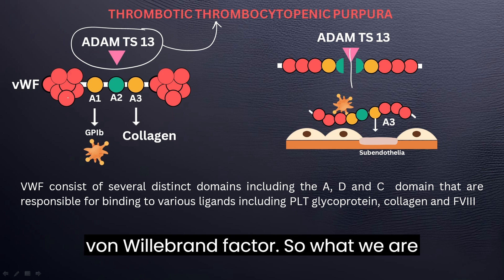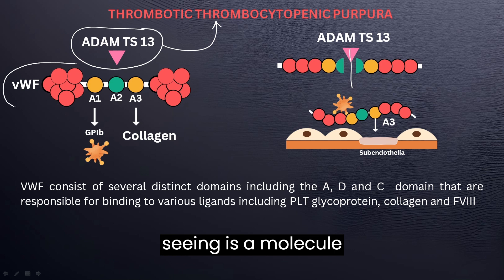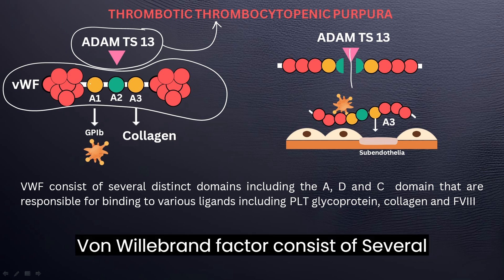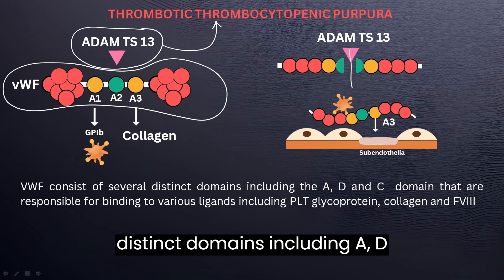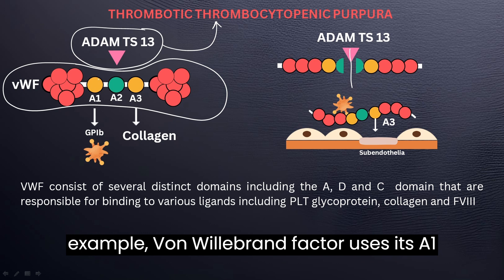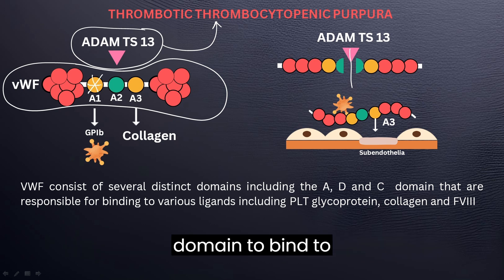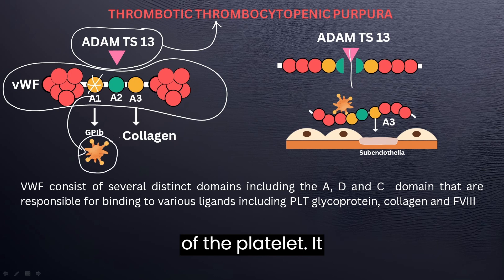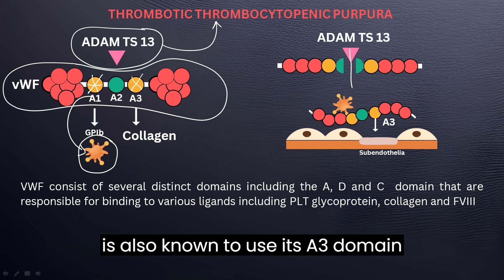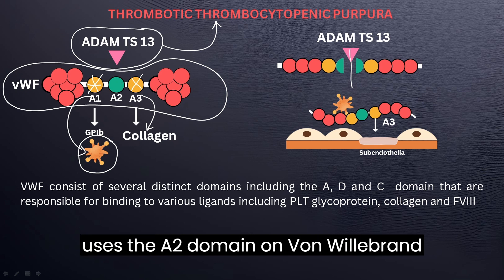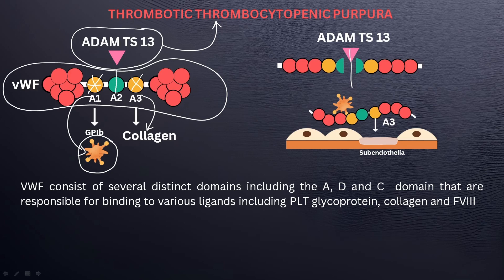Let's take a better look at von Willebrand factor. What we are seeing is a molecule that is partially unfolded. Von Willebrand factor consists of several distinct domains including A, D, and C, but our focus is going to be on the A domain. Von Willebrand factor uses its A1 domain to bind to glycoprotein 1b on the surface of the platelet, its A3 domain to bind to collagen, and importantly, ADAMTS13 uses the A2 domain on von Willebrand factor to split this molecule into two fragments.